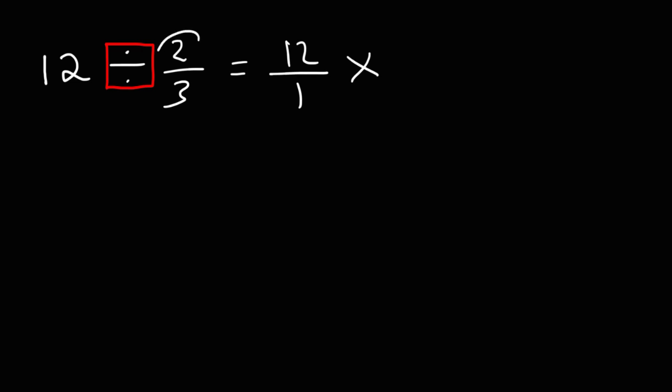And when we do that, we need to flip the second fraction. So we're going to find a reciprocal of 2 over 3, which is 3 over 2. And you could do that. Perhaps you heard of the expression, keep, change, flip. You keep the first part the same, change division to multiplication, and flip the second fraction.